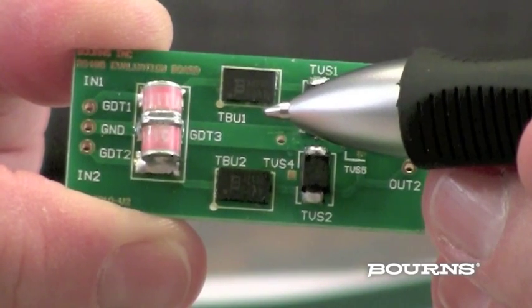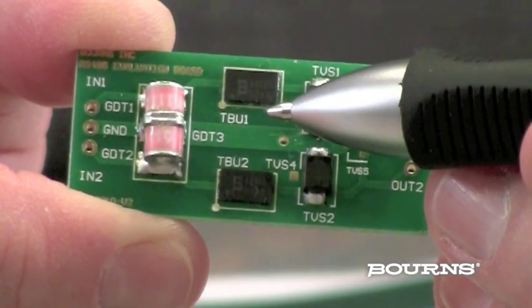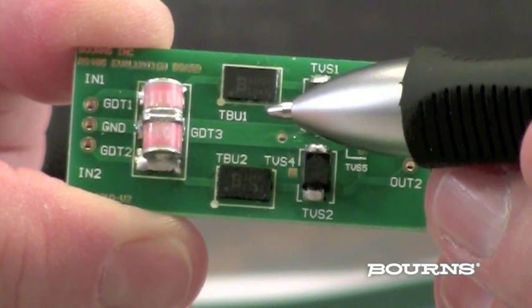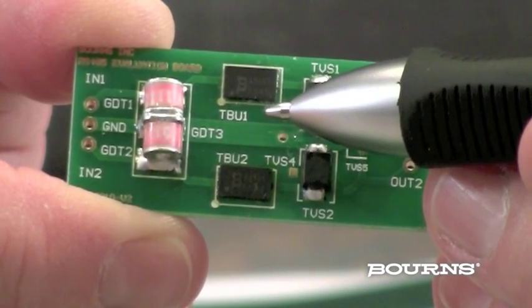The TBU limits current and disconnects, going into what we call the protected state, in less than one microsecond when the transient current exceeds the current trigger level defined by the specific TBU device selected.